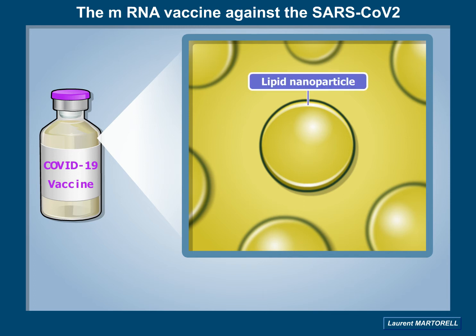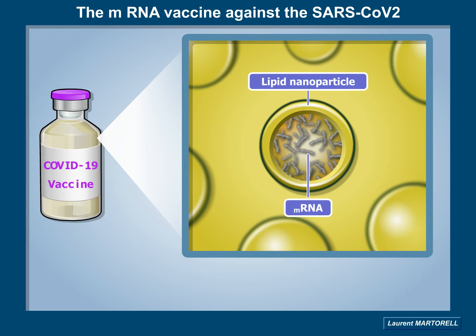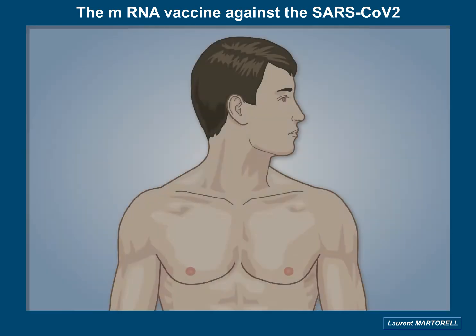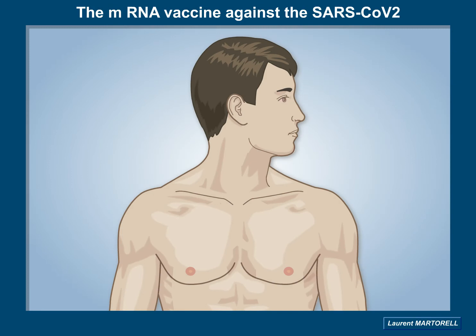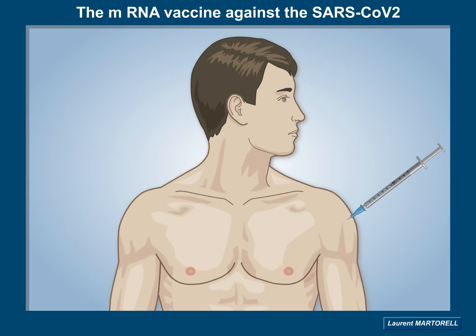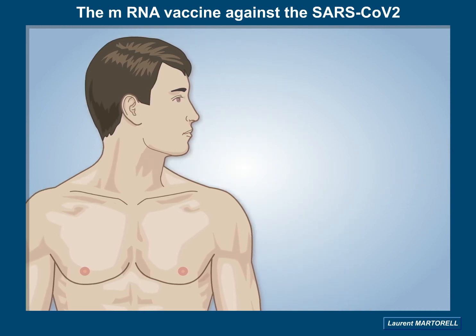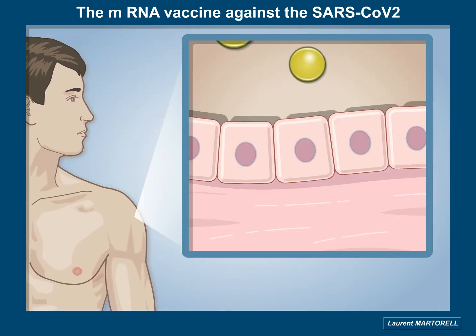The mRNA is packaged in lipid nanoparticles which are used as the mRNA delivery system. The bottom-line question that needs to be addressed is how the vaccine works. Here are explained the main steps. The vaccine is administered via intramuscular injection.